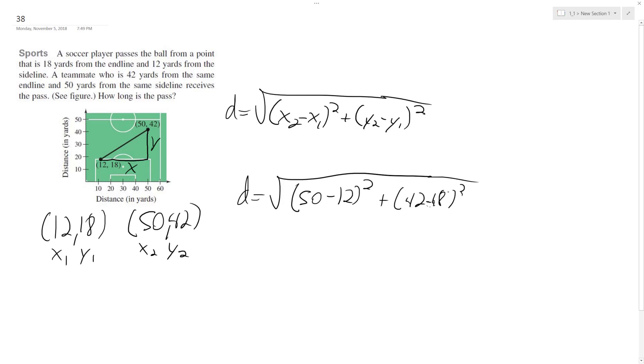Easy. And what we end up with is the square root of 38 squared plus 24 squared, and then square root of 2020. And then this is approximately equal to 44.94, and this is yards.